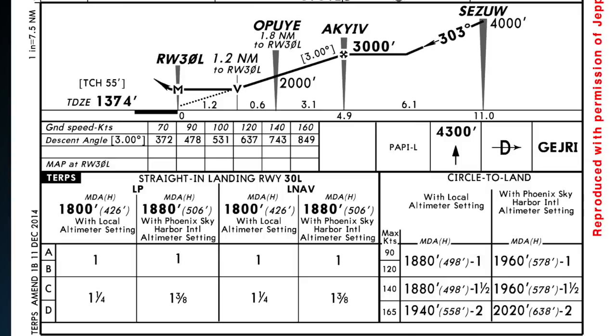It is important to note that the FMS 6.1 update does not permit approaches to be flown down to localizer performance minimums.